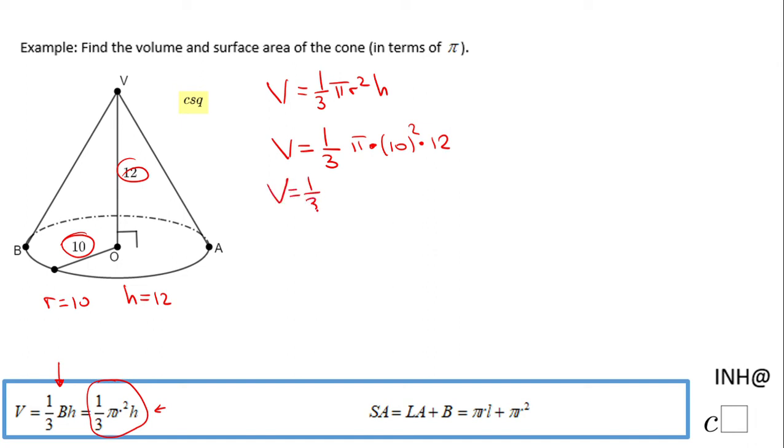have 1 over 3 times pi times 100 times 12. I suggest you simplify here because it's possible. 3 goes into 12 four times, so the volume will be 100 times 4, which is 400. Don't forget about the pi: 400 pi cubic units is the volume.